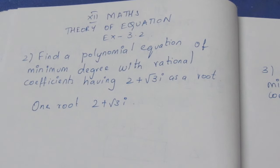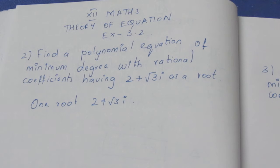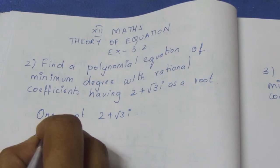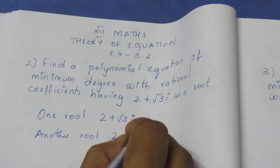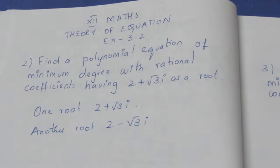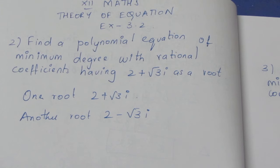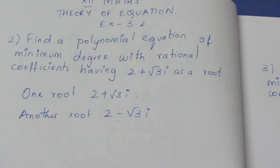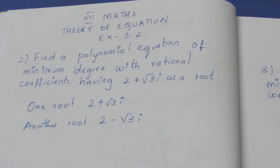This is one root. If you have a complex number as a root, the conjugate is also a root. So the other root is 2 minus root 3i. When you have a complex root, the conjugate root is also a root. Now we can form a quadratic equation.